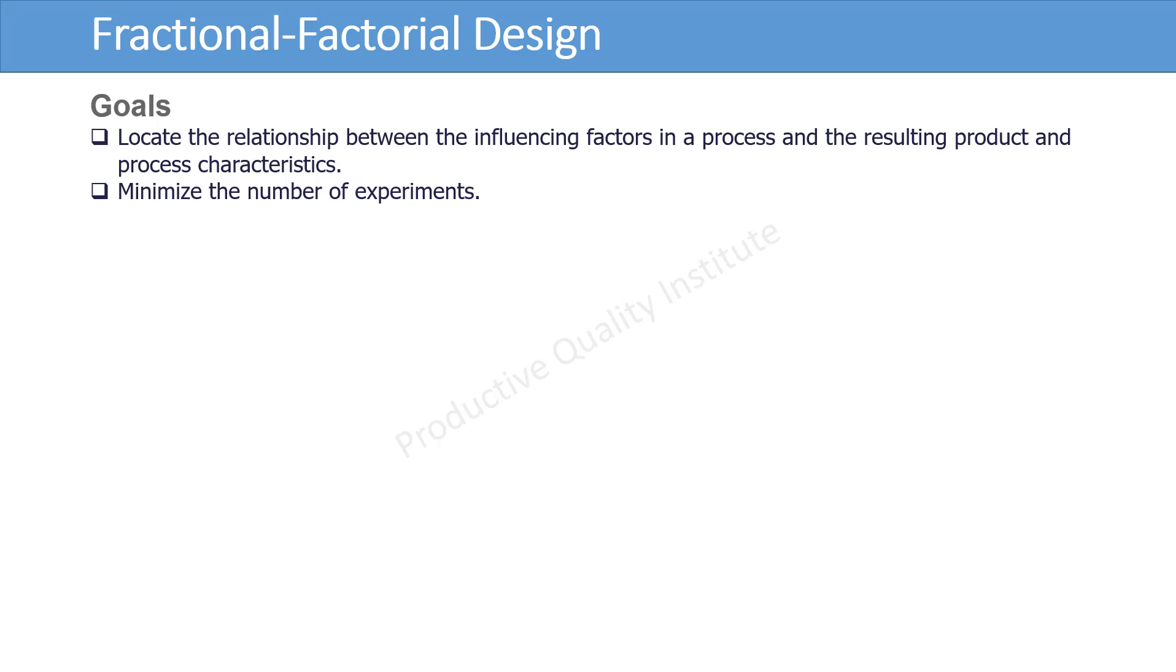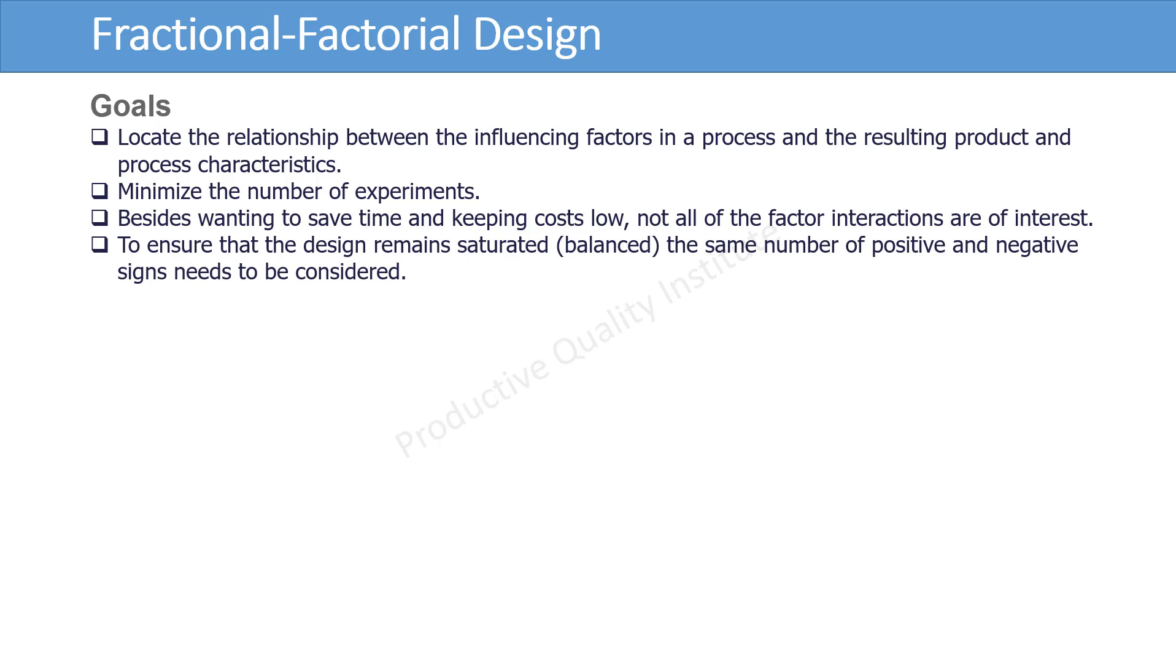The goals from fractional factorial design are: Locate the relationship between the influencing factors in a process and the resulting product and process characteristics. Minimize the number of experiments. Besides wanting to save time and keeping costs low, not all of the factor interactions are of interest. To ensure that the design remains saturated, balanced, the same number of positive and negative signs needs to be considered.